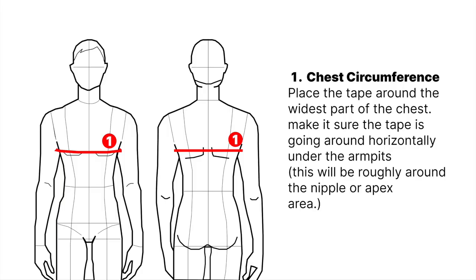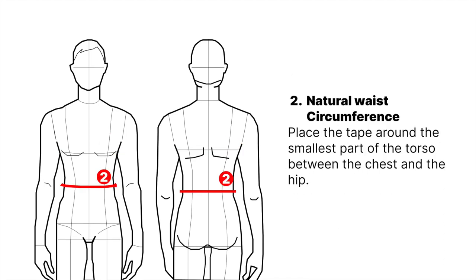Chest circumference: place the tape around the widest part of the chest. Natural waist circumference: place the tape around the smallest part of the torso between the chest and the hip.